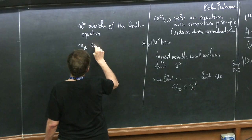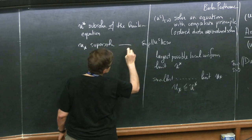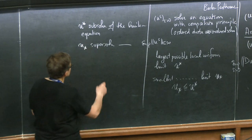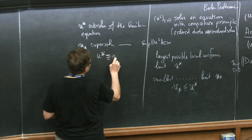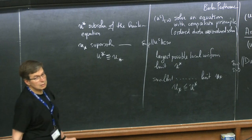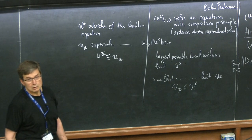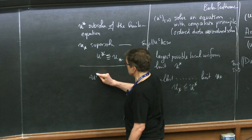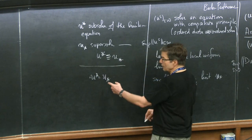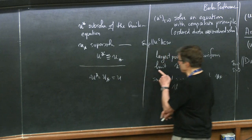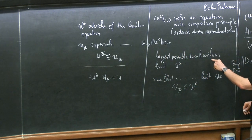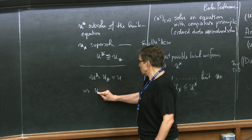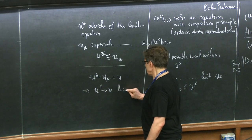If you do that, because there is a comparison principle, the subsolution has to be below the supersolution. But that's the opposite of u upper star being above u lower star. So you put them together and get u upper star equals u lower star. And because you define these as local lim sup and lim inf, that implies that the u epsilons converge to u locally uniformly.